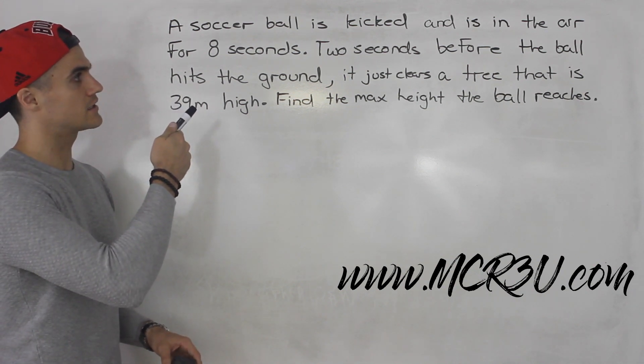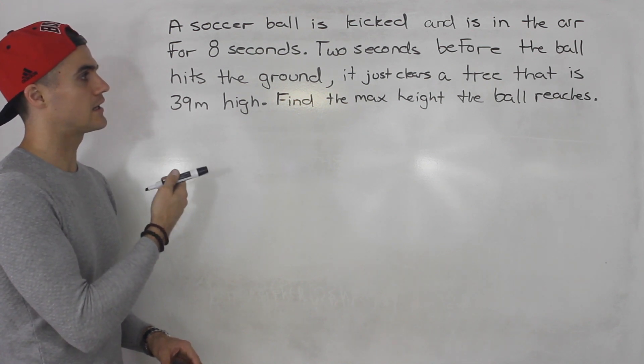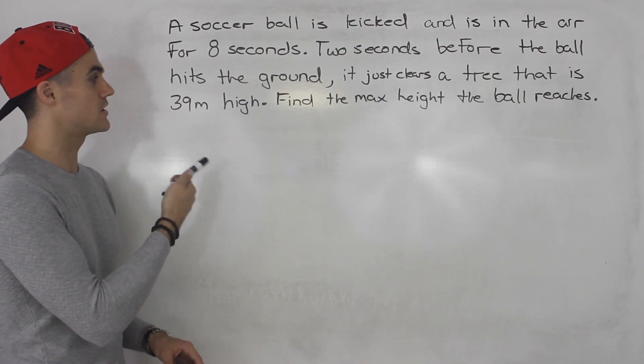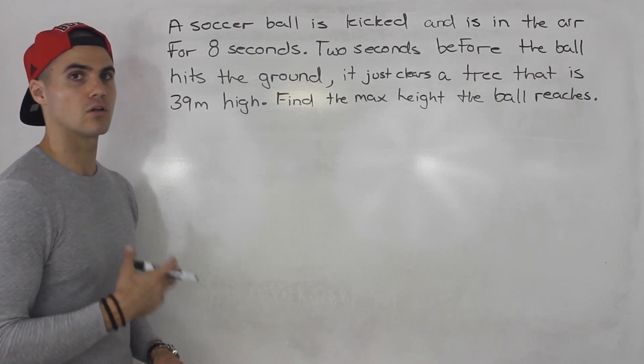So a soccer ball is kicked and is in the air for eight seconds. Two seconds before the ball hits the ground, it just clears a tree that is 39 meters high. Find the max height the ball reaches.